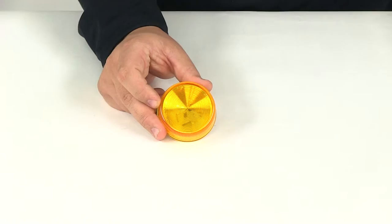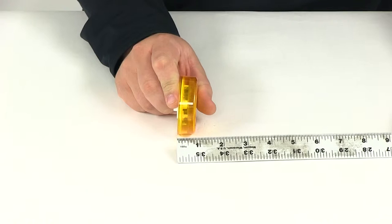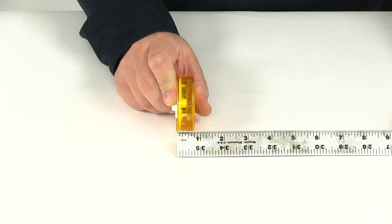If we take a look at the overall diameter of the light, it's going to give us a measurement of about two and a half inches. The depth measuring just the lens, that's going to give us a measurement of about 13 sixteenths of an inch.